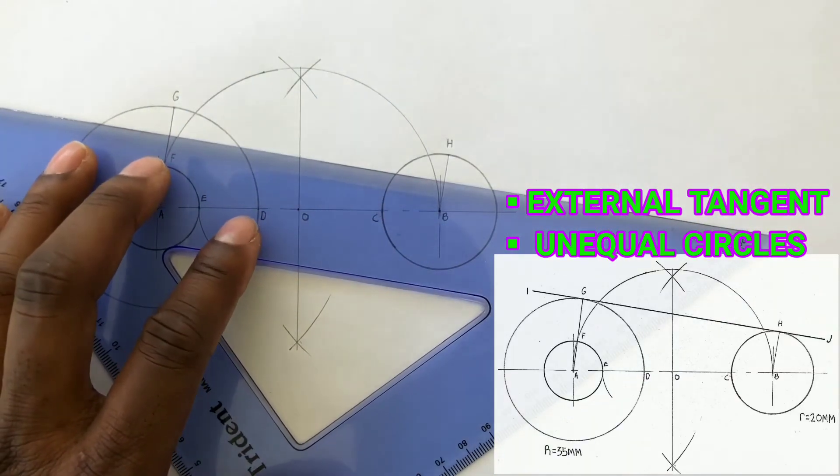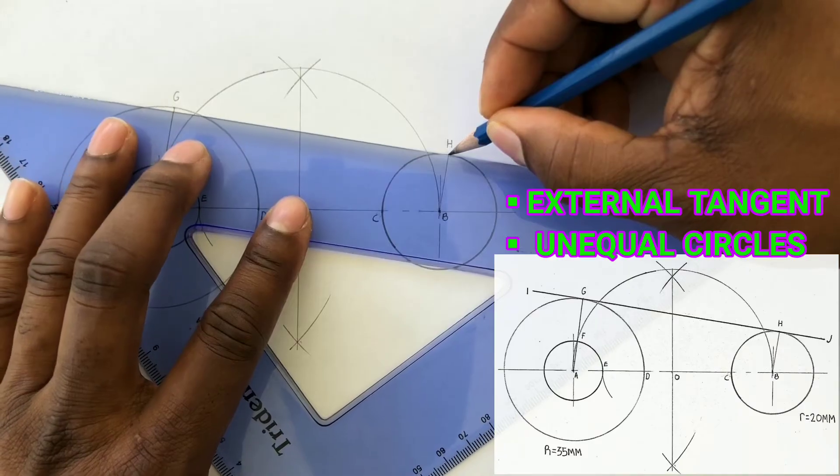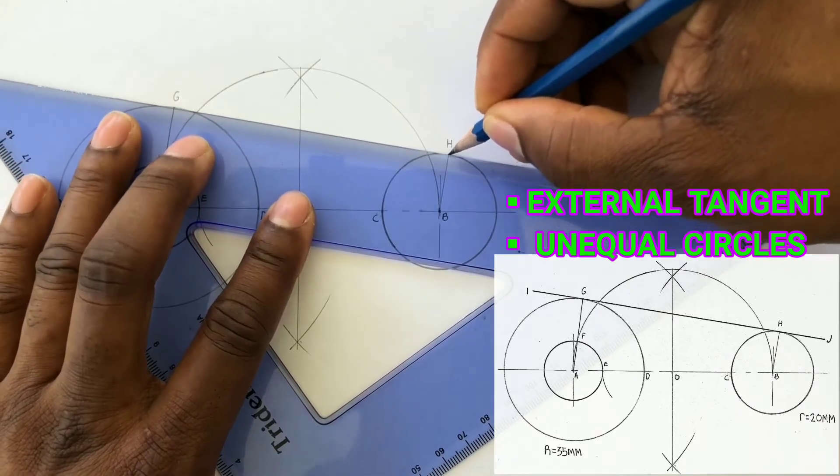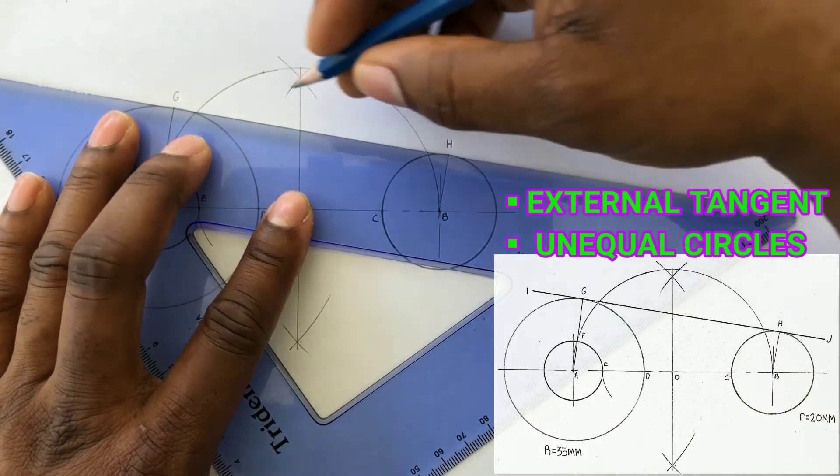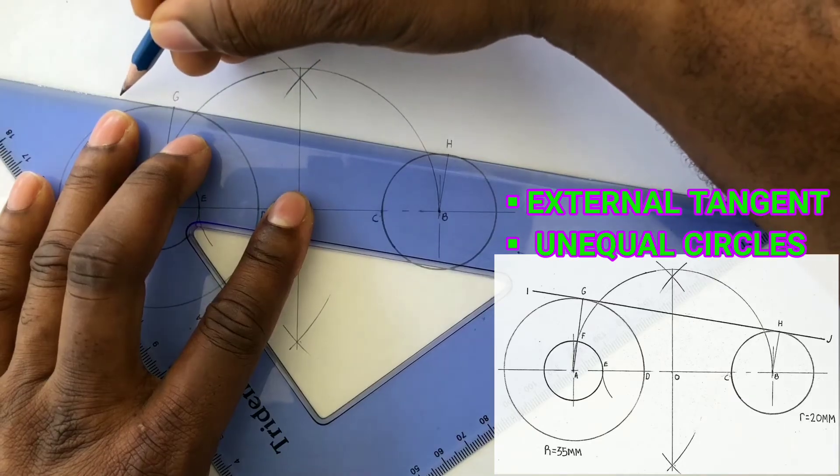We will now draw a line passing through point G and point H. This line will give us our required tangent.